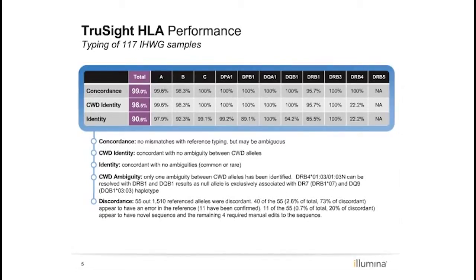We achieved 99% concordance. For CWD identity, we were essentially at 99% with one common well-documented ambiguity. That ambiguity is a DRB4-0103 versus 0103-null, where the null allele SNP is located outside of our amplicon. The null allele is seen exclusively in haplotype with DR7 and DQ9, specifically DRB1-07 and DQB1-0303, and we're confidently calling those alleles. So it's straightforward to resolve that ambiguity with no additional follow-up testing.